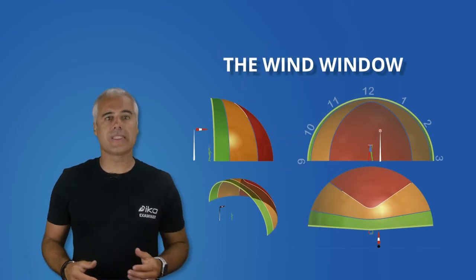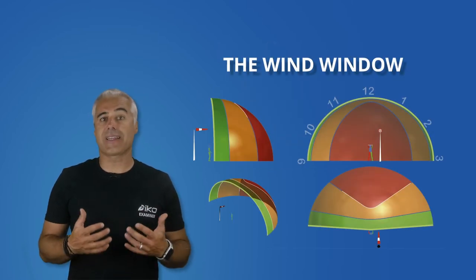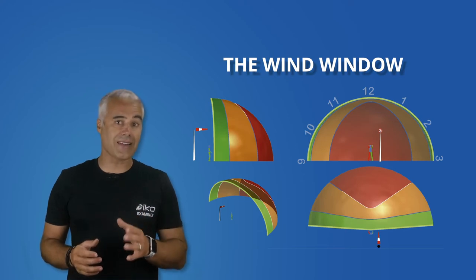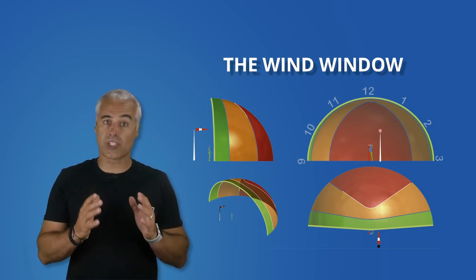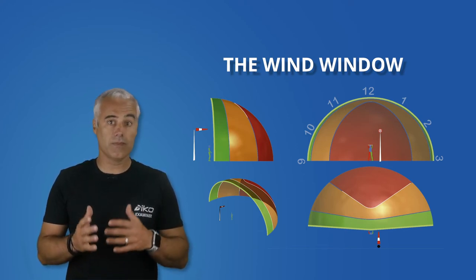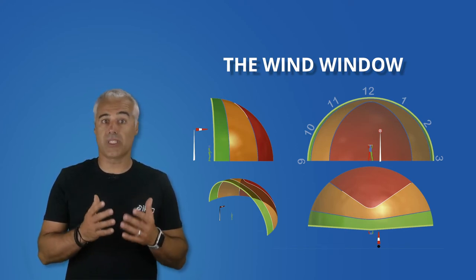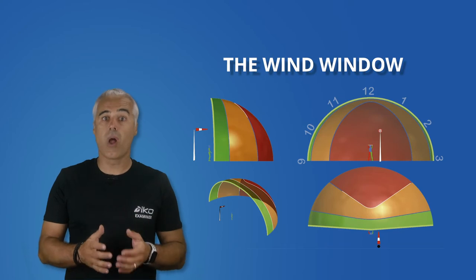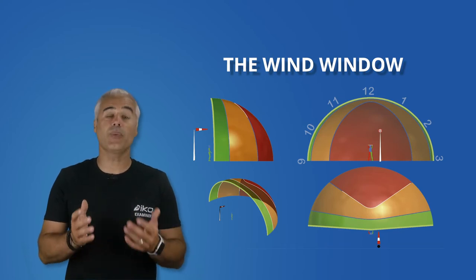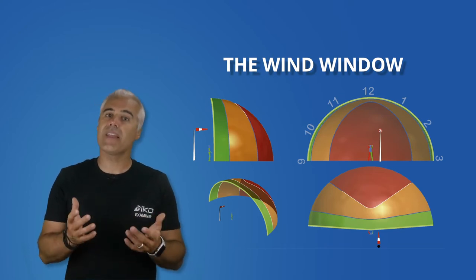The wind window is the area in which the kite flies. You must understand it and be able to describe it with simple words, and you must also know how the kite is expected to behave within it.